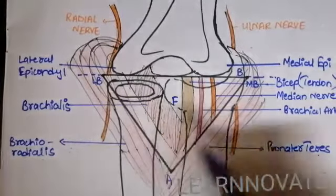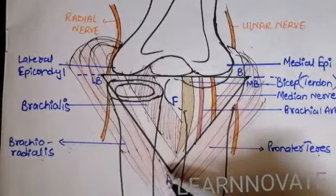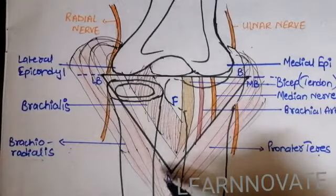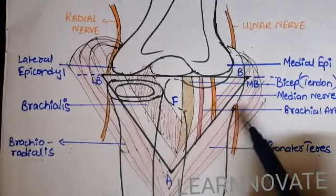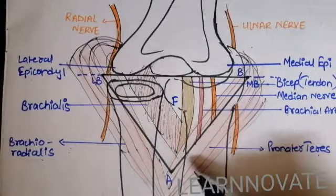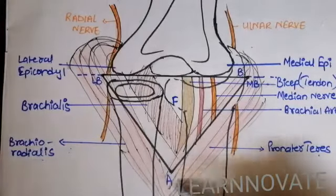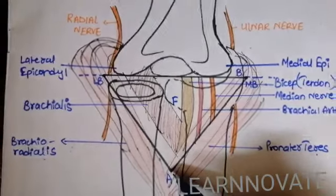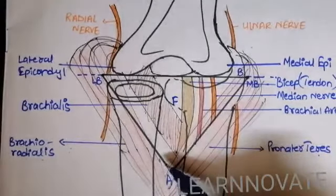When these two muscles are combined at an angle, we call this part as the apex — that is the intersection of the brachioradialis and the pronator teres. This is called as the apex of the cubital fossa, where the triangle is completed.